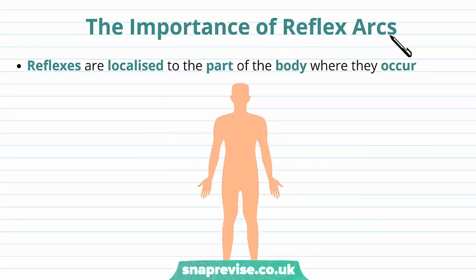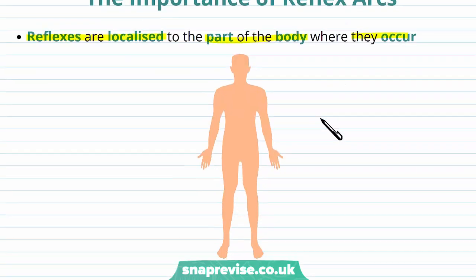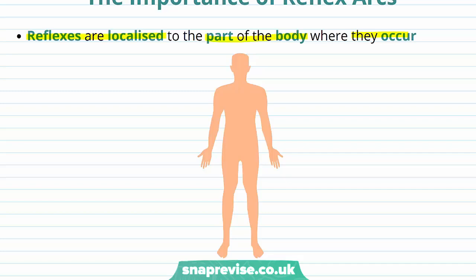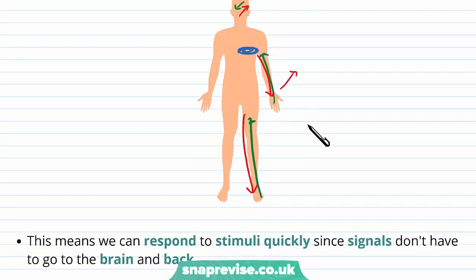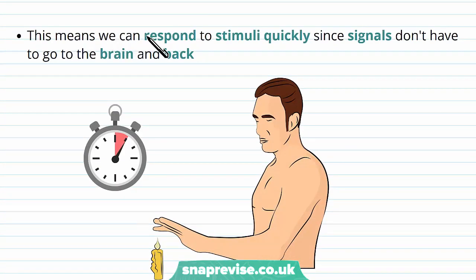So why are reflex arcs important? Reflexes are very localised to the part of the body where they occur. For example, if we touch something hot with our hand, the reflex arc takes the information in, processes the response, and moves our arm away — doing this in a very local part of the spinal cord near the arm or shoulder. Similarly, if this were for the leg or something in the head like a blinking reflex, it's always local to the effector, so it can happen very quickly. The localization means the response can be very rapid and happen almost immediately.